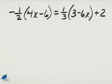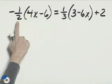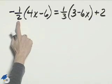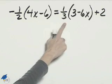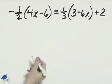In this equation with the fractions, we can multiply both sides by the least common denominator and eliminate them. But if you look at negative one-half times 4x and negative one-half times negative 6, we won't have any fractions when we're done multiplying. And the same is true on the right with the one-third.